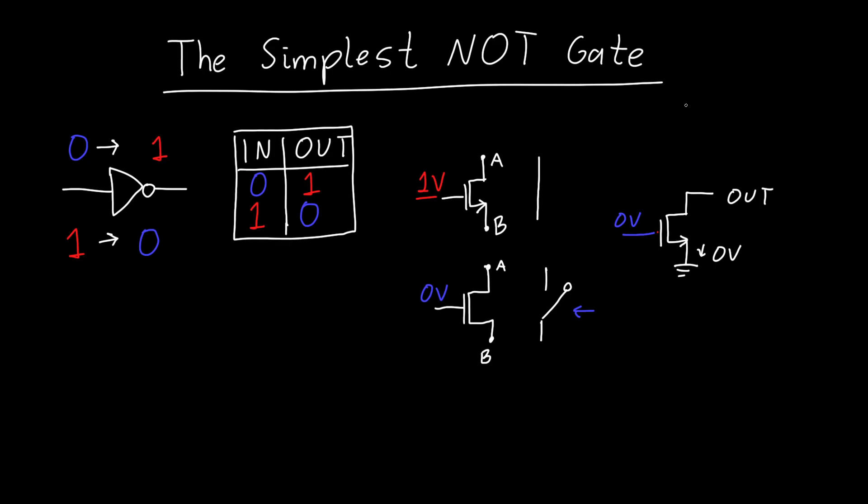And one something else that we can add is a resistor. So if we add a resistor here, for example, a one kilo ohm resistor, then when the input to the transistor is zero,